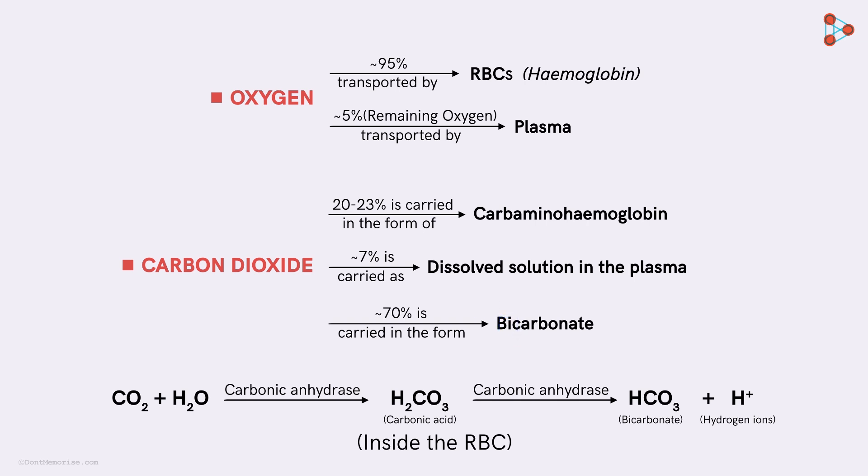But we do not exhale bicarbonates. So, how does this system work? How is carbon dioxide made available during exhalation? Well, the simple answer is reconversion. The bicarbonate and the hydrogen ion produced are converted back to carbon dioxide and water as the RBCs reach the alveoli. This is performed by the same enzyme carbonic anhydrase.